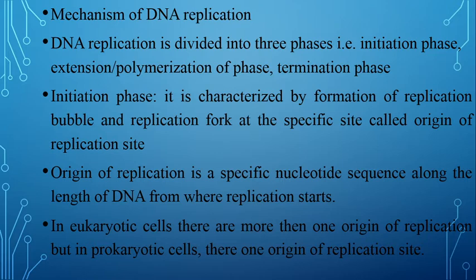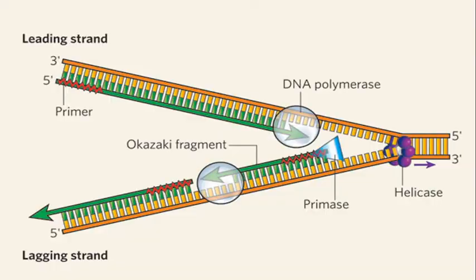Eukaryotic cells have multiple origins of replication, while prokaryotic cells have only one origin of replication. This is because eukaryotic DNA is very large; if it replicated from only one origin, it would take too much time. So eukaryotic DNA has more than one origin of replication.